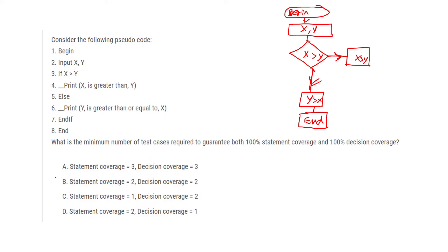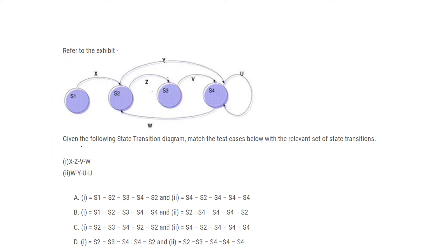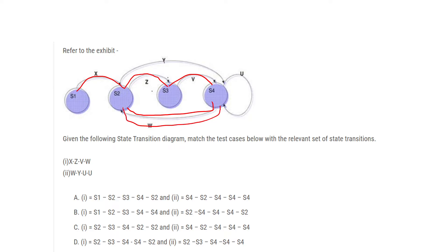Next, state transition diagrams are given. The first option is X, Z, V, W — that is S1, S2, S3, S4, and back to S2. The second is W, Y, U, U — W is S4 to S2, Y is S2 to S4, then U, U means S4 to S4 again. The answer is clearly the first one — A.